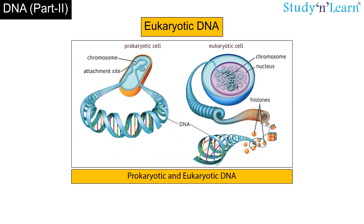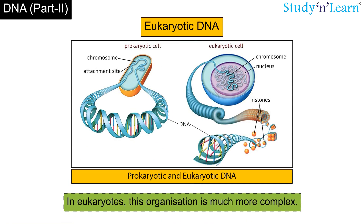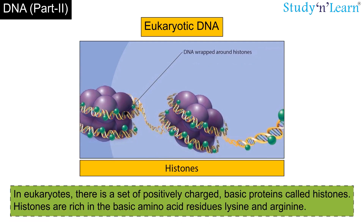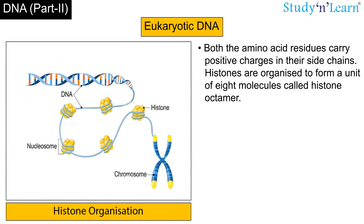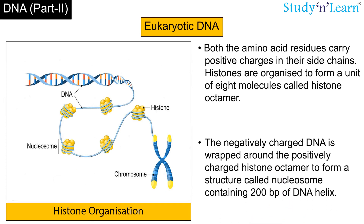In eukaryotes, this organization is much more complex. There is a set of positively charged basic proteins called histones, which are rich in the basic amino acid residues lysine and arginine. Both amino acid residues carry positive charges in their side chains. Histones are organized to form a unit of 8 molecules called the histone octamer. The negatively charged DNA is wrapped around the positively charged histone octamer to form a structure called the nucleosome, containing 200 base pairs of DNA helix.